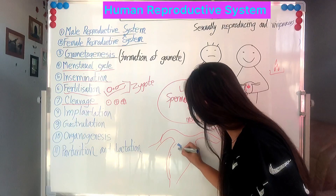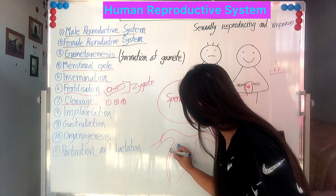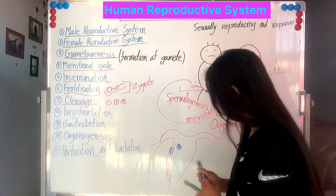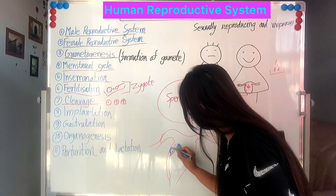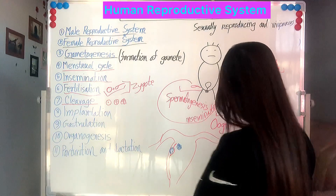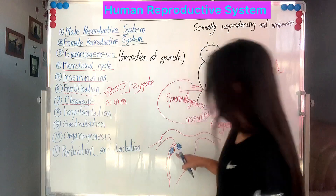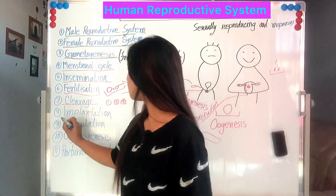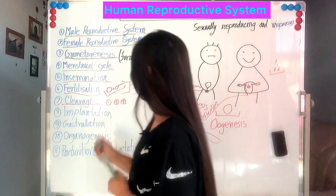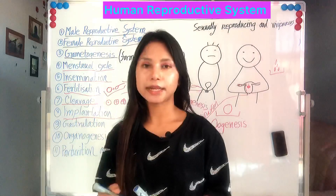The structure formed is called a blastocyst. The blastocyst will implant into the innermost wall of the uterine cavity. This process is called implantation.